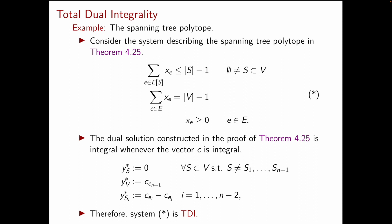So now let's go back to our definition of TDI-ness. In fact, the arguments that we used in the proof of theorem 4.25 show that our system star is, in fact, TDI. In fact, let's consider once again the definition of TDI-ness. From the definition of TDI, we should pick a vector c, such that the linear program max cx, such that x satisfies star, has a finite optimum.